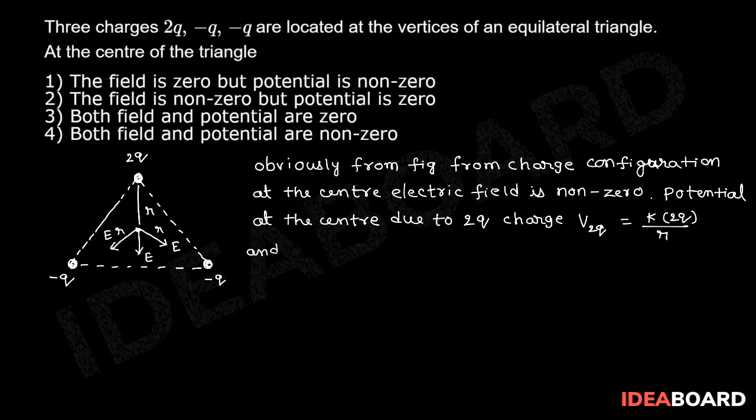And potential at the center due to the negative charge: V_-q is equal to negative k times q divided by r, where r is the distance from the center point to the corner.